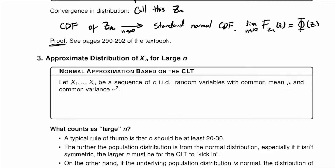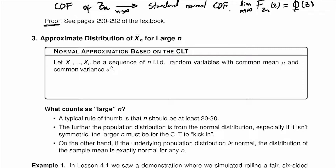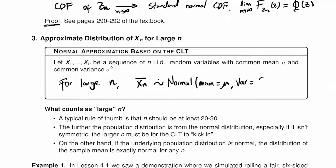Let x1 through xn be a sequence of n iid random variables with common mean and common variance — the same setup we discussed previously. For large sample size n, the sample mean will be approximately distributed normal with mean μ and variance σ² over n.